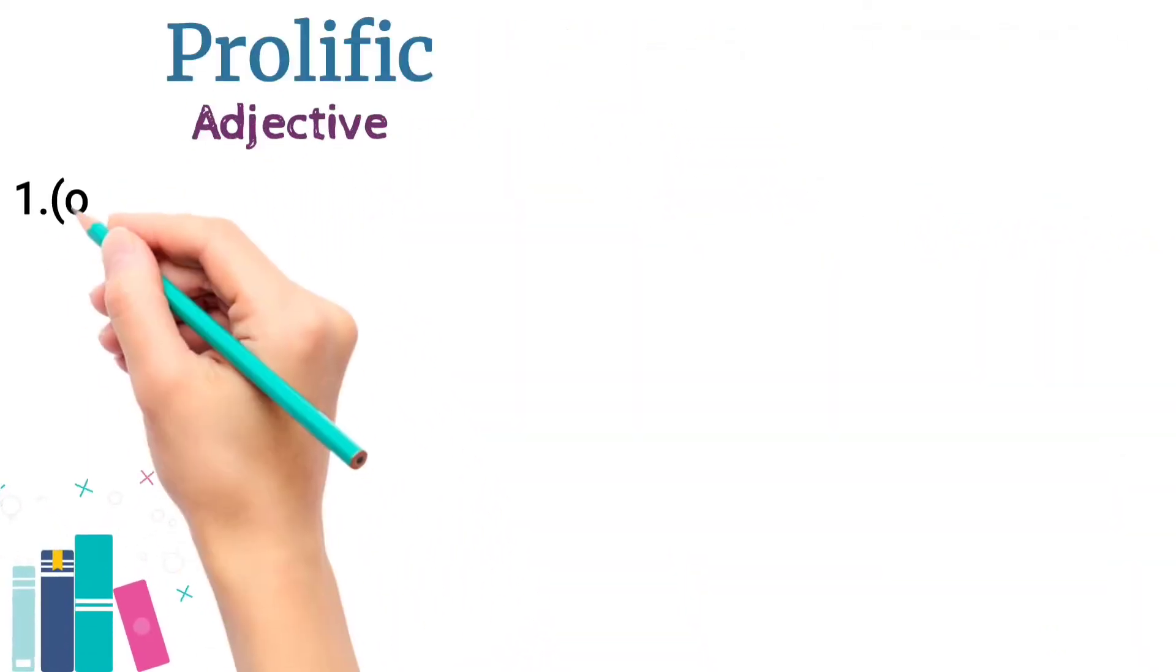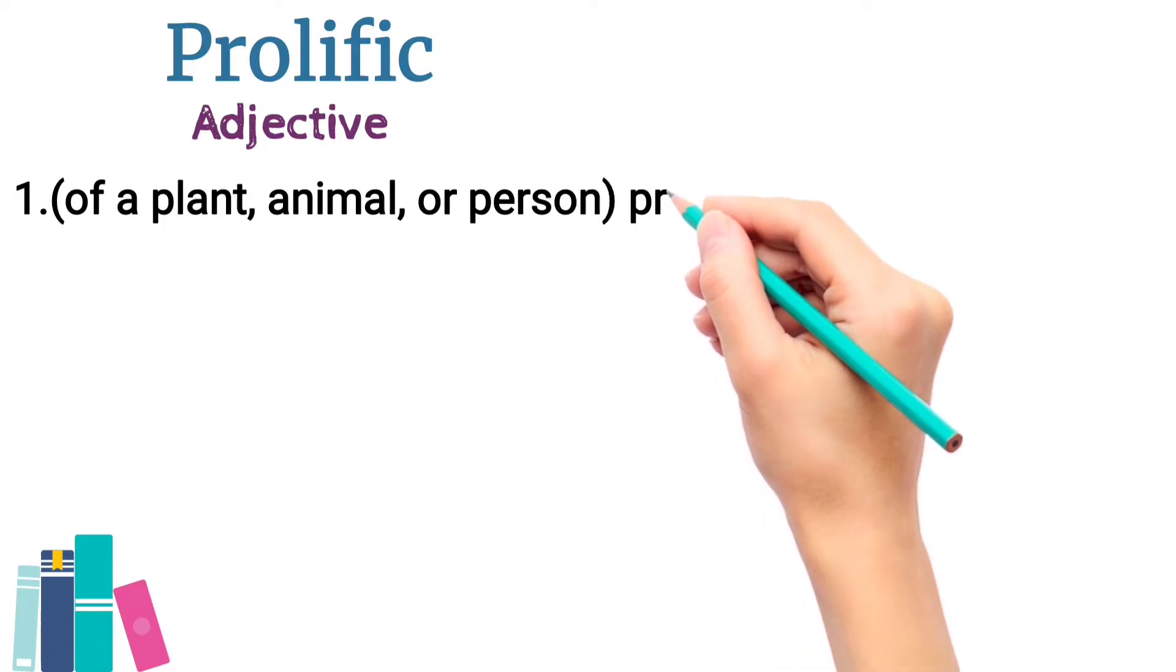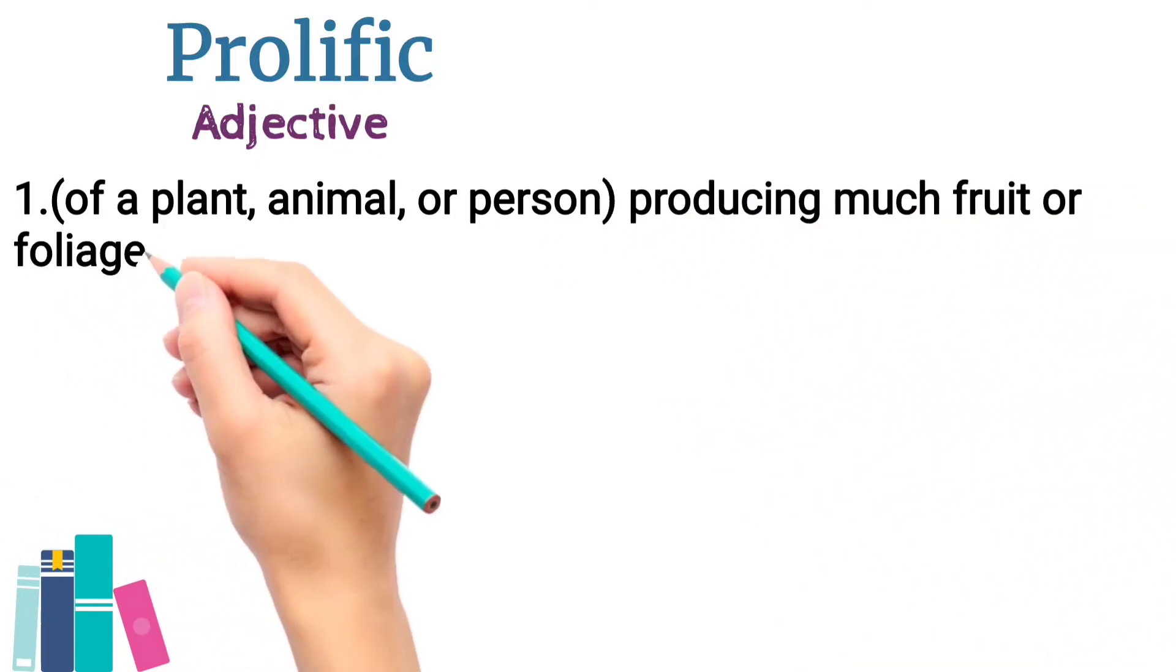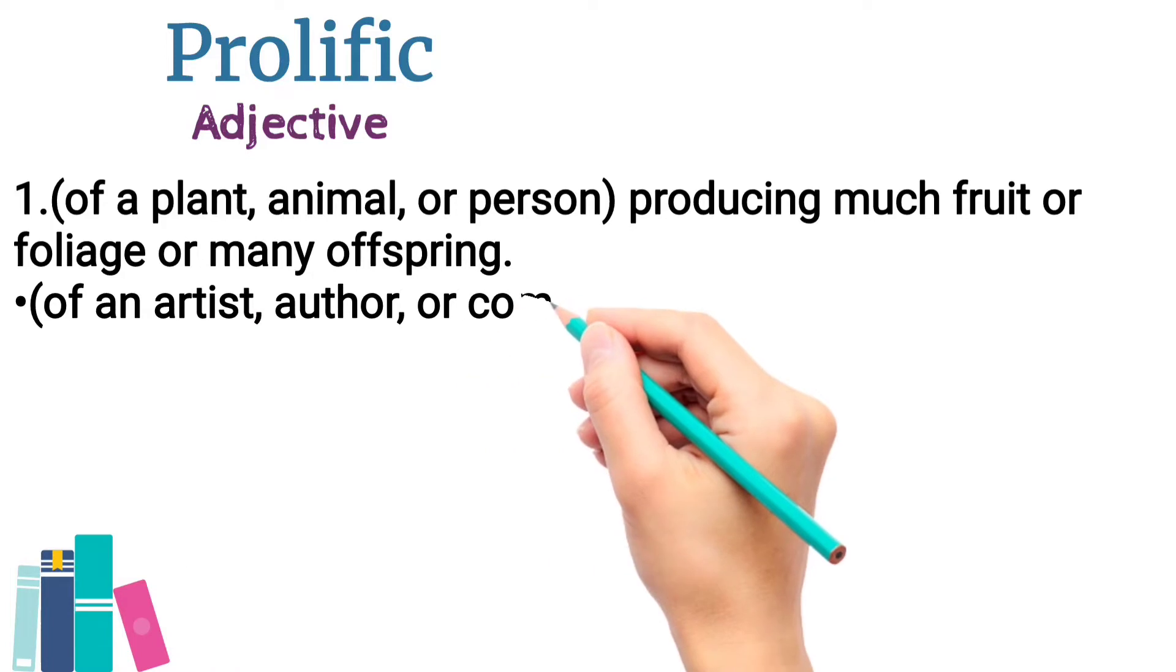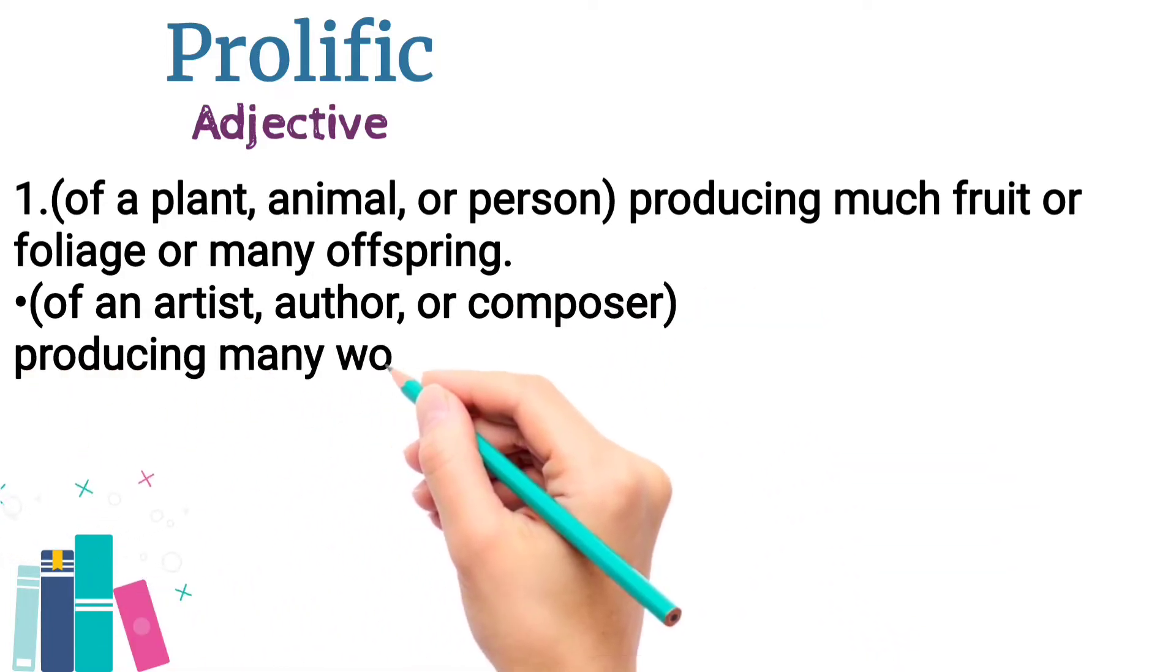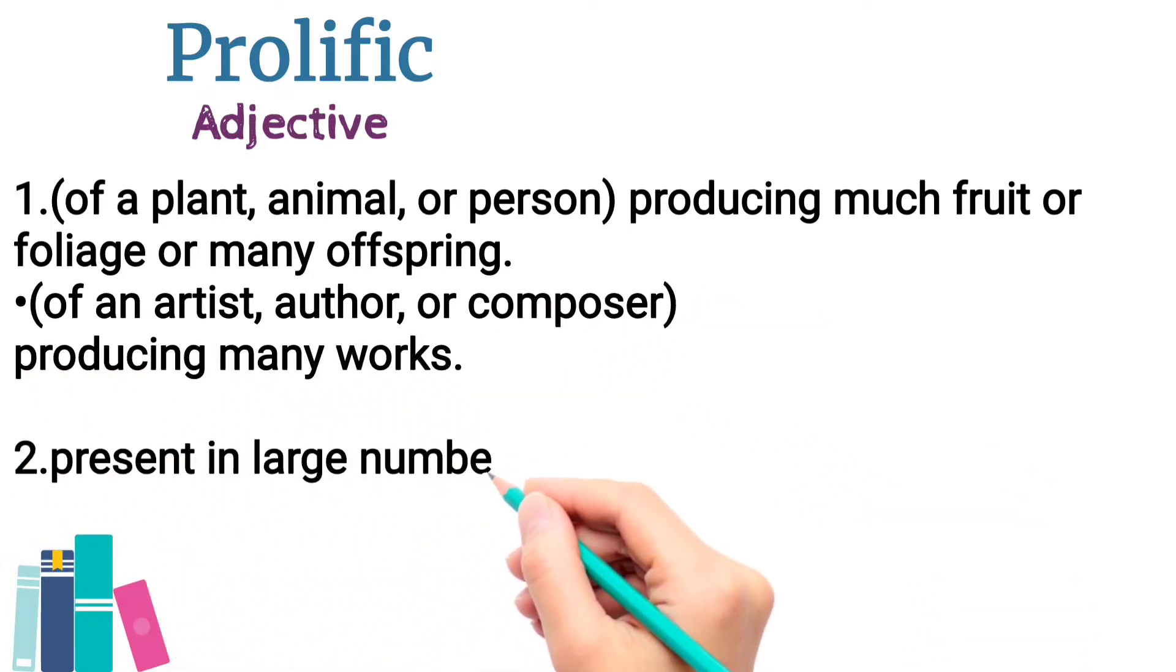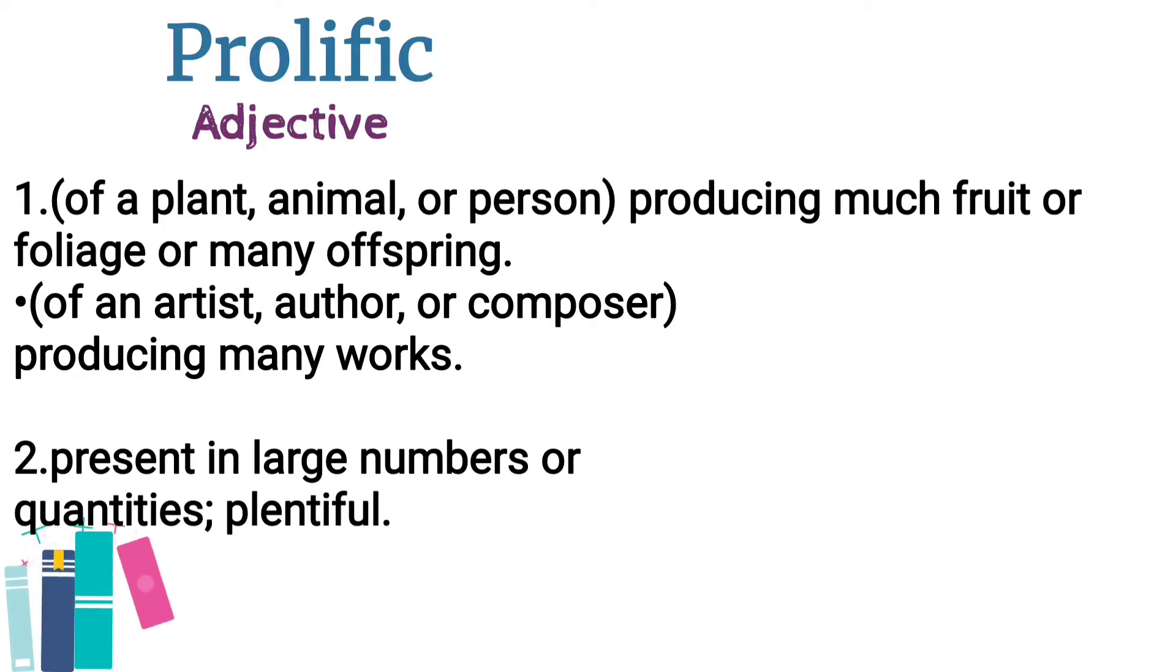Prolific is an adjective which means producing much fruit or foliage or many offspring for plant, animal or person, or an artist or composer who produces many works. And it also means anything that is present in large number or quantities, plentiful.